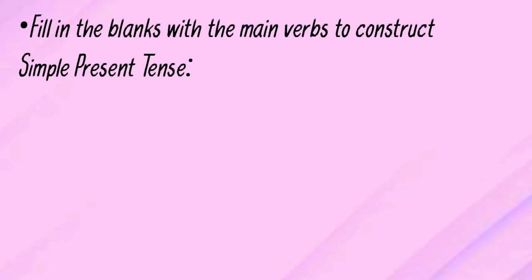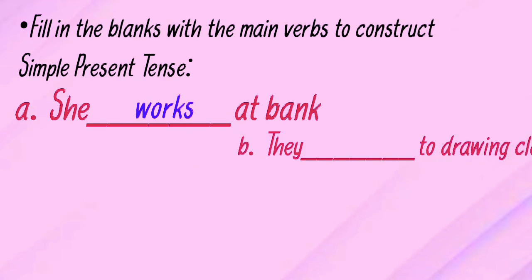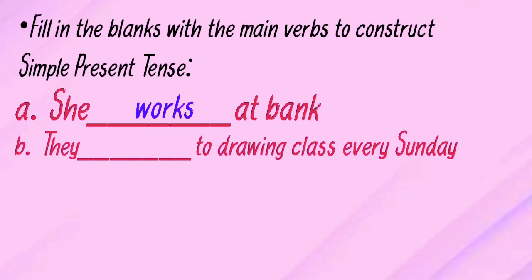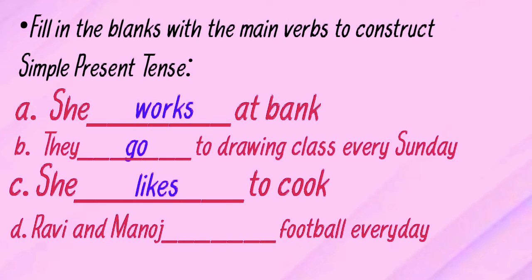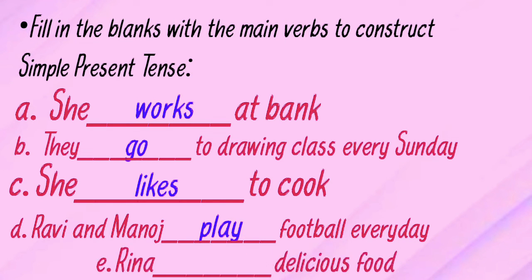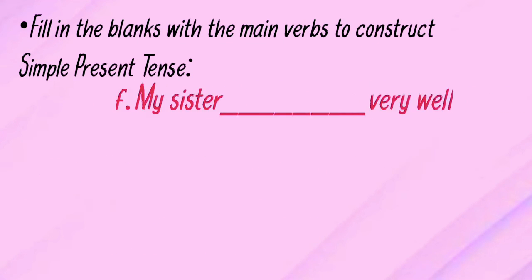Now we will do some exercises. Fill in the blanks with the verbs to construct the simple present tense. She ___ at a bank — the answer is 'works.' They ___ to drawing class every Sunday — the answer is 'go.' She ___ to cook — the answer is 'likes.' Ravi and Manoj ___ football every day — the answer is 'play.' Reena ___ delicious food — the answer is 'makes.' My sister ___ very well — the answer is 'sings.'